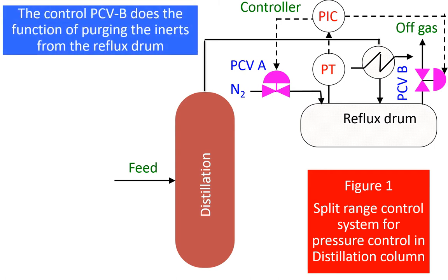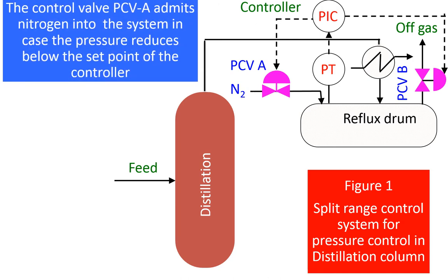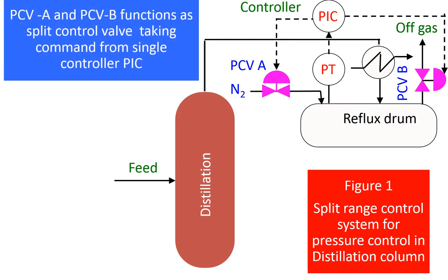Instead, the split range control method is used. There are two pressure control valves. One is a nitrogen valve, PCVA, that outputs nitrogen into the reflux drum. And another pressure control valve, PCVB, that lets the non-condensables go to the atmosphere by purging.